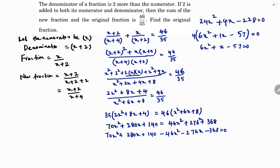To factorize 6x² + x minus 57, multiply 57 by 6 to get 342. Finding factors of 342: 2 × 171, 3 × 57, and 3 × 19. So 19 and 18 are the required factors.